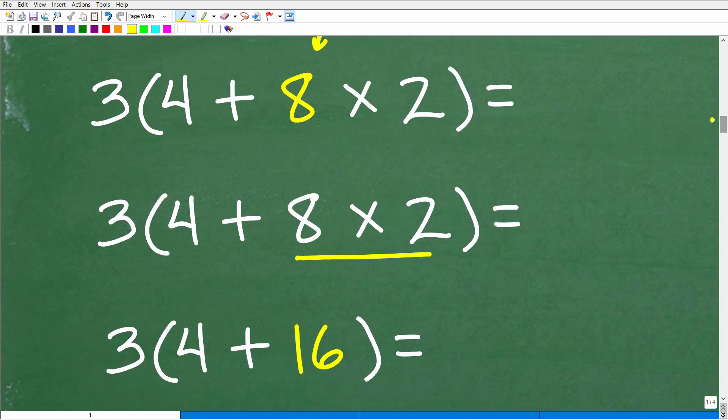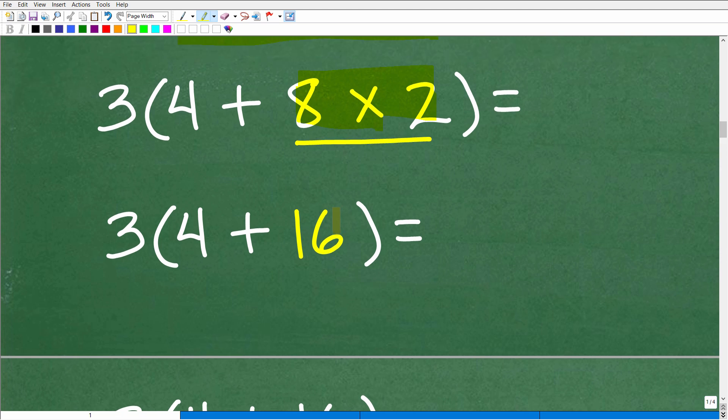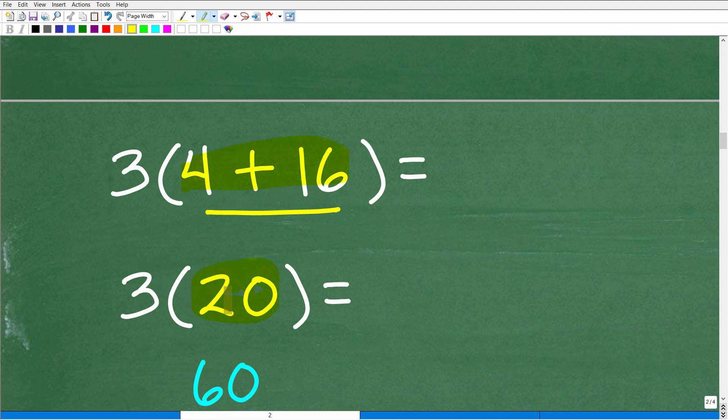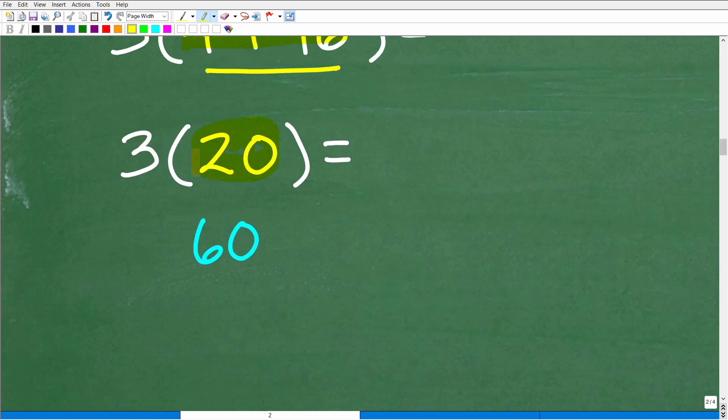So now our problem is 3 times, okay, this means multiplication, but we're still working inside the parentheses. So we have 4 plus 8 times 2, so it's pretty obvious now that we have to do multiplication before addition. No issues there. So we have 8 times 2, which, of course, is 16. So we're still working inside the parentheses. So 4 plus 16 is what? Well, that's 20. Okay, so 4 plus 16 is 20. Now we're done, there's nothing more to do inside the parentheses. So now we leave the parentheses, and then we take this, and this is multiplication. This means 3 times 20, which, of course, is 60.